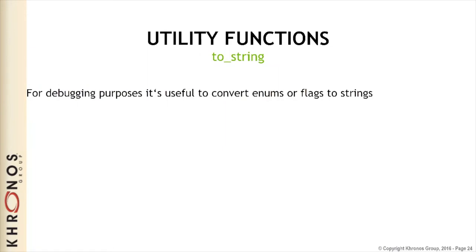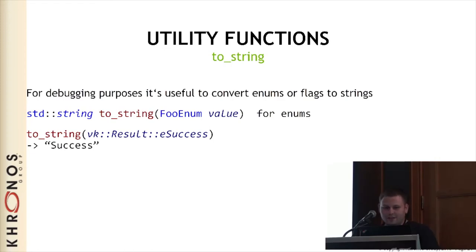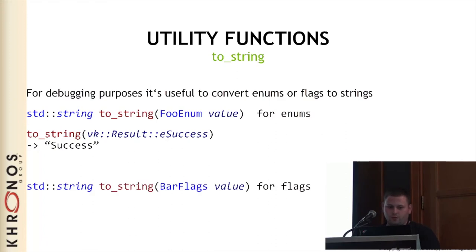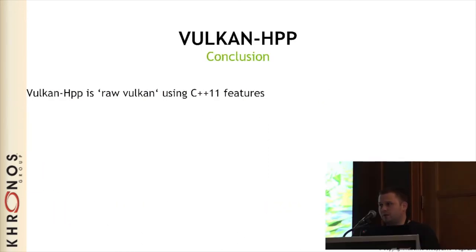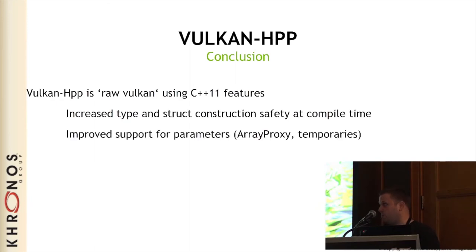You might have seen in one of the slides a conversion function from flags to a string output. We have generated toString functions for each and every enum and for flags. You just call toString on any flags or any enum and you get a string back, which you can use with std::cout or any string output. So if you call it on two bits set, you get a string with both bits and an OR in between. Those are the basics of Vulkan HPP, and you can get it on the Khronos website or included in the Vulkan SDK since version 1.0.24.